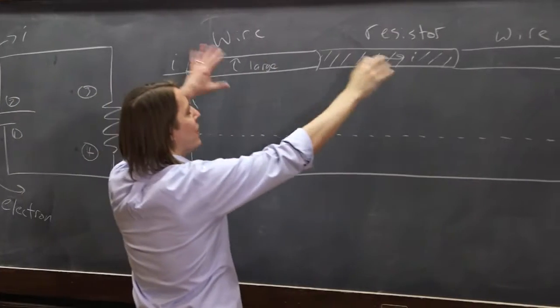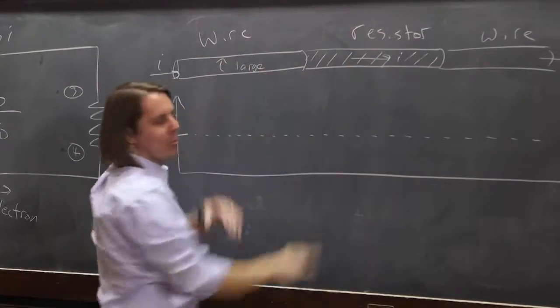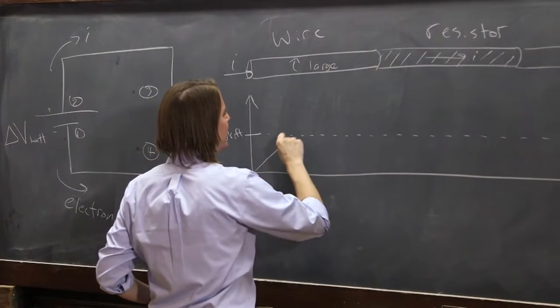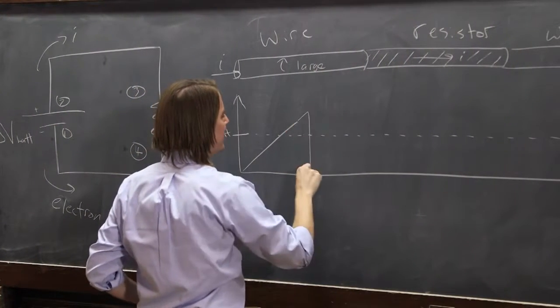If you had current flowing different amounts in different sections, you'd have charge building up on the surfaces. That's not what happens, it just flows. So this thing has a large tau, and it has to maintain the same V-drift. It must be something kind of like that.